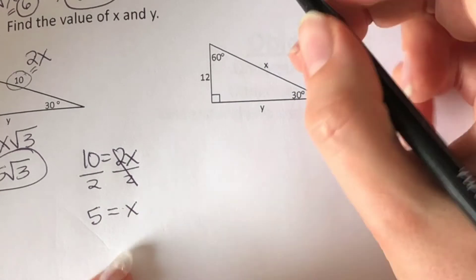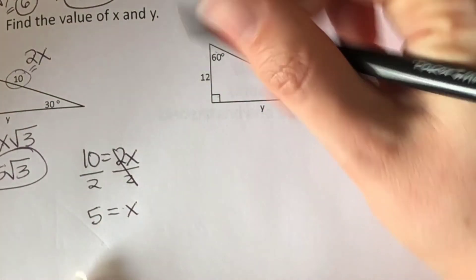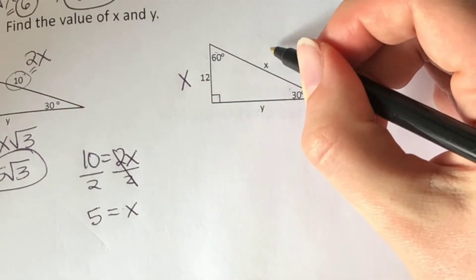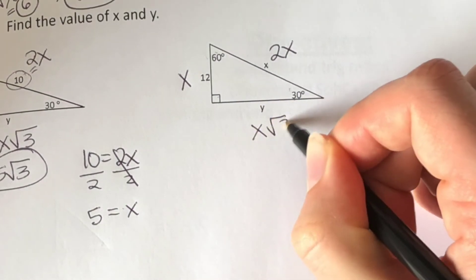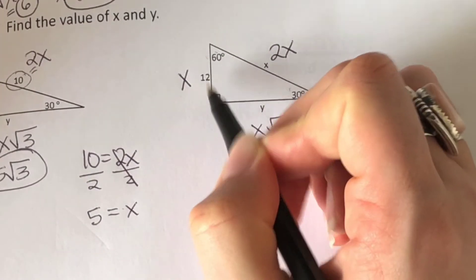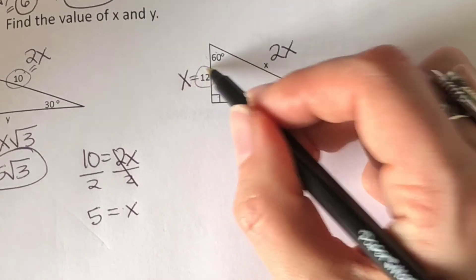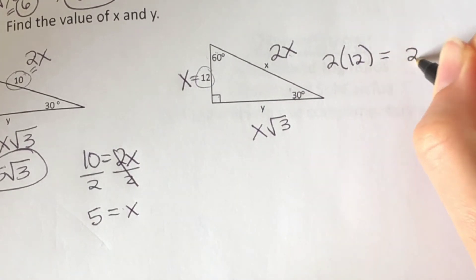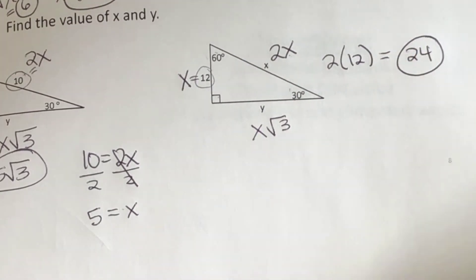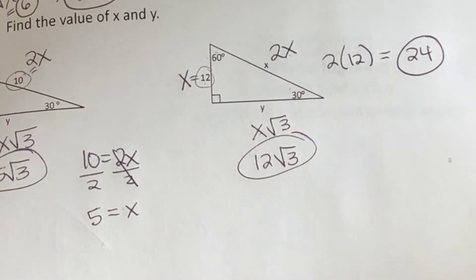Let's do one more. On this one they gave us the short side: X equals 12. The hypotenuse is 2X and the middle length side is X times the square root of 3. These ones are the easiest where they give you the short side, because if X equals 12, I just plug it in: hypotenuse equals 2 times 12 equals 24, and the middle side is 12 times the square root of 3. Done.